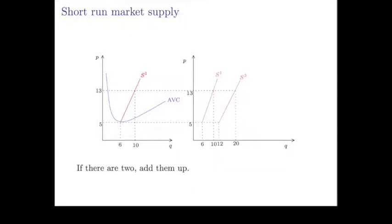If you had two firms, let's say they were identical, well you just add them up. In this case you would just double all the quantities. So at the price of 13, the single firm provides a quantity of 10, so if there were two firms you would get a quantity of 20 at the same price of 13.